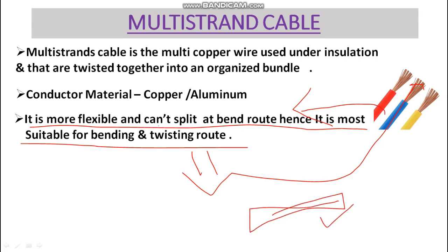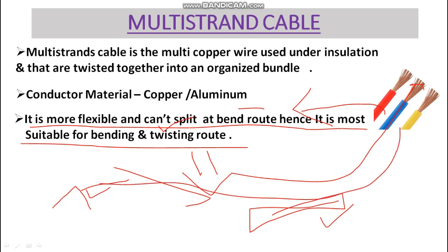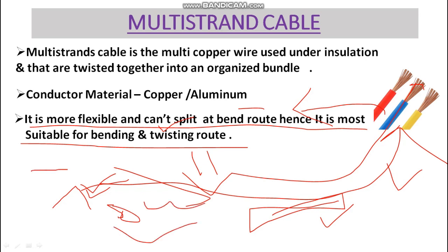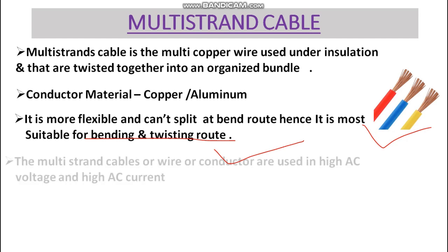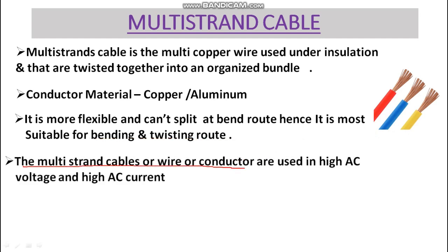When there is a 90-degree bend somewhere, there is less chance of this cable breaking. But if we use solid wire in that bend condition, it will break because of the single strand. That's why multi-strand cable is more suitable for bending and twisting routes.